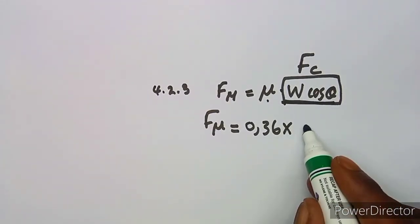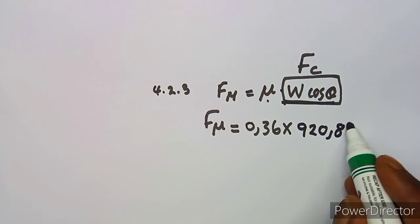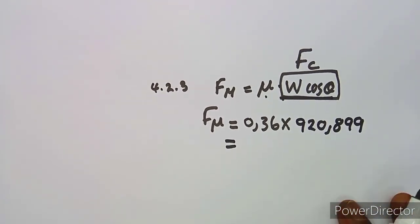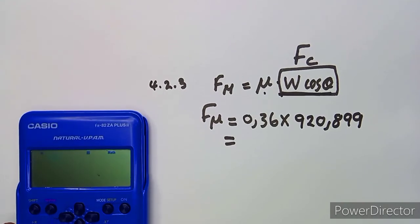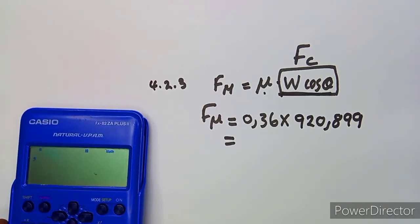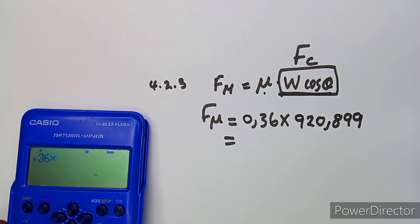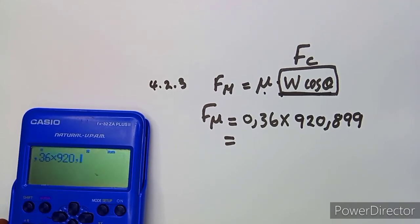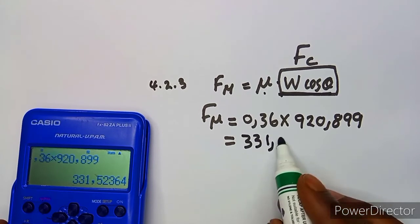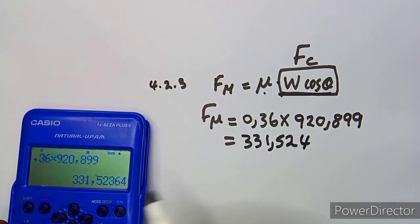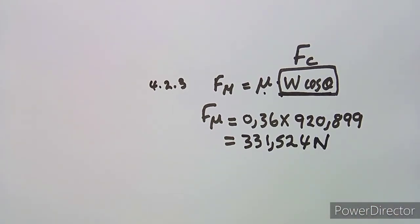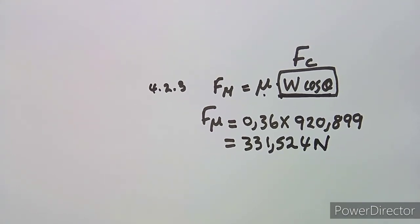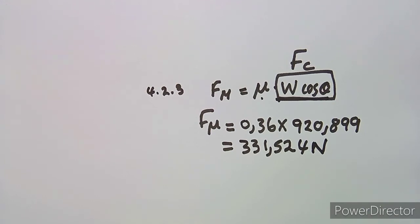Multiplying 0.36 × 920.899 gives 331.524 N. That is our frictional force, expressed in newtons.